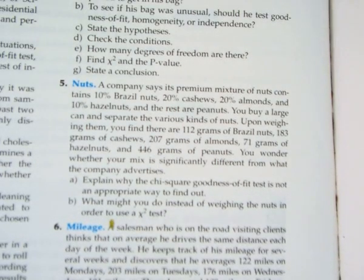Alright, so in problem five we have this cashew problem. The company has 10% Brazil nuts, 20% cashews, 20% almonds, 10% hazelnuts, and the rest are peanuts.